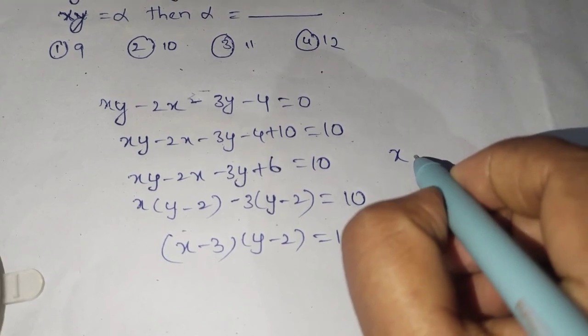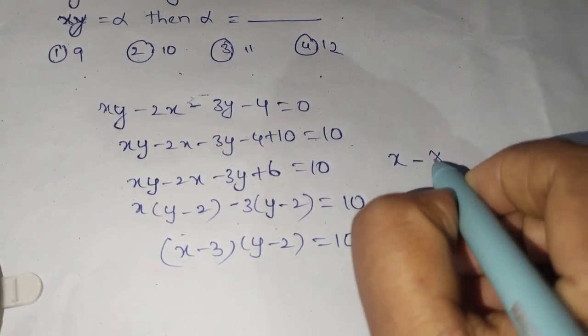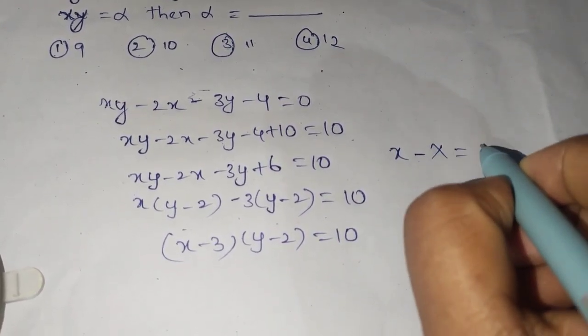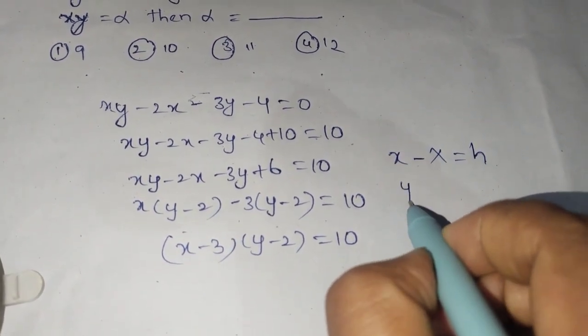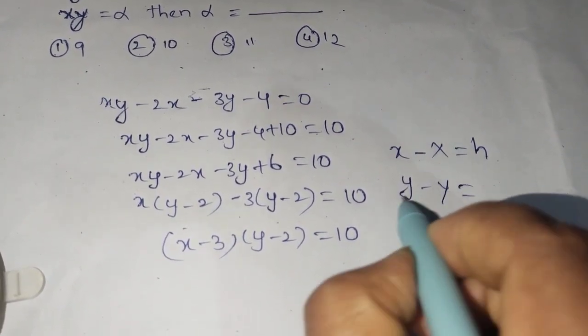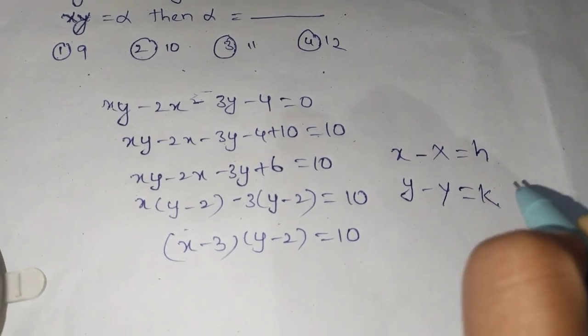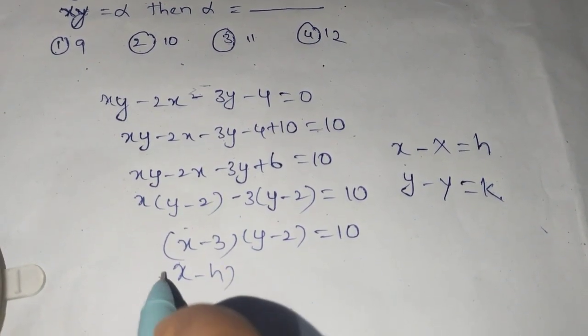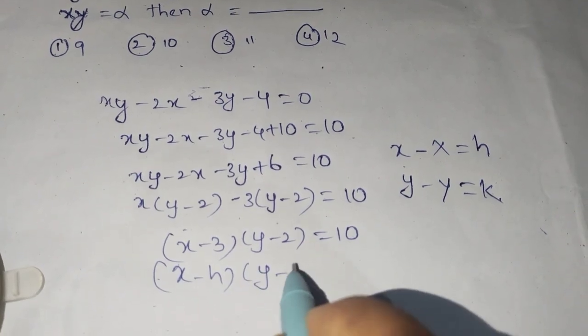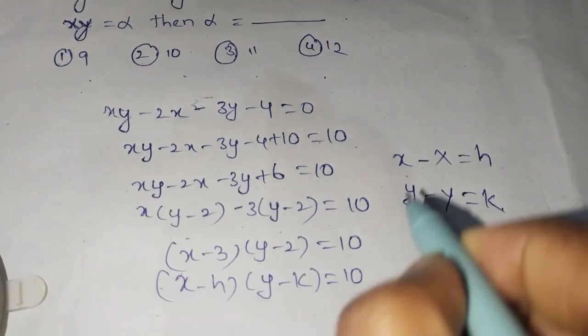x original minus the changed axis equals h, and small y original minus changed equals k. So it is looking like x minus h into y minus k.